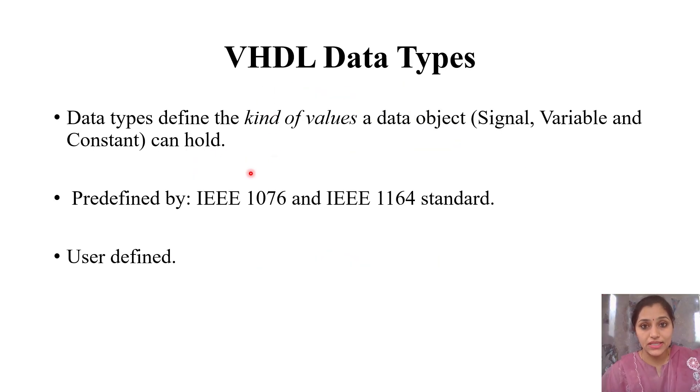VHDL stands for Very High Speed Integrated Circuits Hardware Description Language. It's a programming language used to describe hardware. In VHDL there are four types of data objects: signals, variables, constants, and files. Data types define the kind of value a data object can hold.